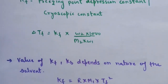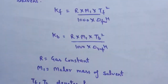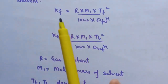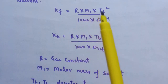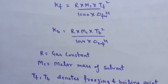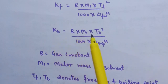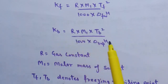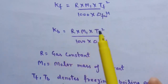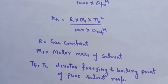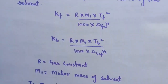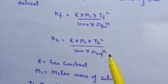The values of Kf and Kb depend on the nature of the solvent. The expression for Kf is: Kf = (R × M1 × Tf²)/(1000 × ΔHfusion). Similarly, for the ebullioscopic constant: Kb = (R × M1 × Tb²)/(1000 × ΔHvaporization). Here R is the gas constant, M1 is the molar mass of solvent, Tf and Tb are the freezing and boiling points of pure solvent respectively, ΔHfusion is enthalpy of fusion, and ΔHvaporization is enthalpy of vaporization of the solvent.